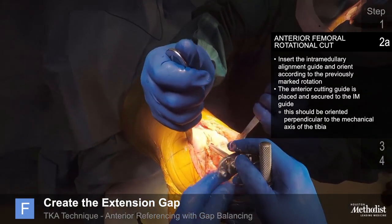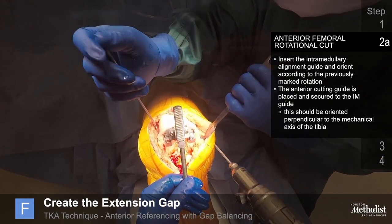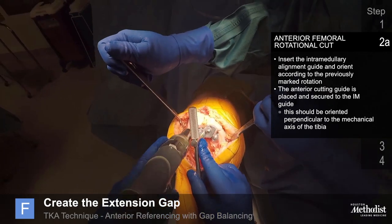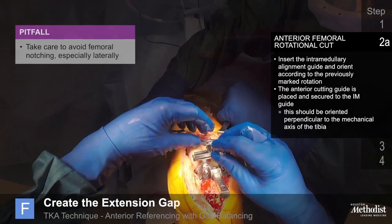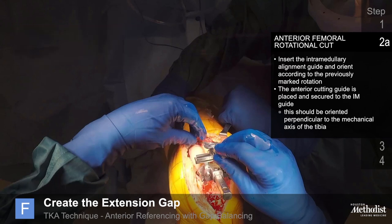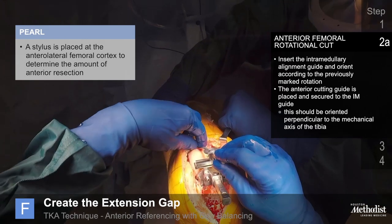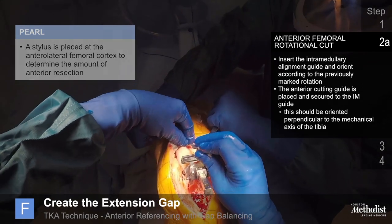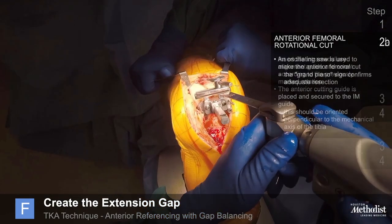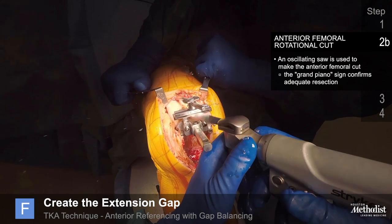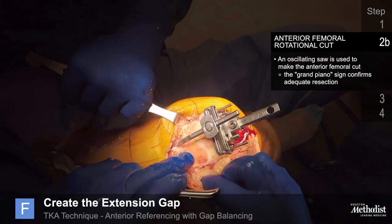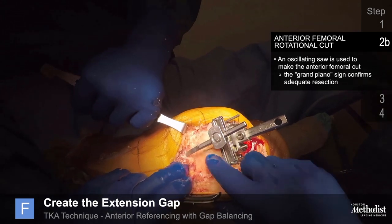Insert the intramedullary alignment guide and orient according to the previously marked rotation. This anterior femoral rotational cut should be oriented perpendicular to the mechanical axis of the tibia with the knee at 90 degrees of flexion. Because this anterior femoral cut is externally rotated with respect to the anatomy of the anterior femur, there is a tendency to notch laterally and take excess lateral bone. It is best to place the anterior stylus on the anterolateral femoral cortex to avoid notching laterally. The anterior cutting guide is placed and secured to the IM guide, then an oscillating saw is used to make the anterior femoral cut. The grand piano sign — where the resulting cancellous bone pattern is longer laterally than medially — confirms adequate resection.